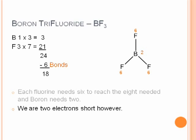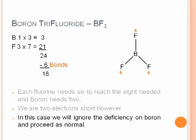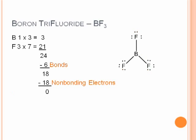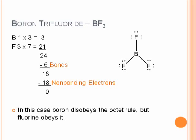We're two electrons short, which would imply a double bond, but instead we'll ignore the deficiency on boron. We add our non-bonding electrons to each fluorine: six times three is eighteen. Subtracting eighteen leaves zero. Evaluating: each fluorine has eight electrons, and boron only has six — but that's okay. We allow fluorine to obey the octet rule and allow boron to disobey it. That is a perfectly fine structure for boron trifluoride.